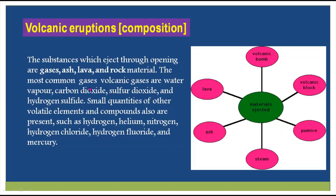The most common volcanic gases are water vapor, carbon dioxide, sulfur dioxide, and hydrogen sulfide. Small quantities of other volatile elements and compounds are also present, such as hydrogen, helium, nitrogen, hydrogen chloride, hydrogen fluoride, and mercury.